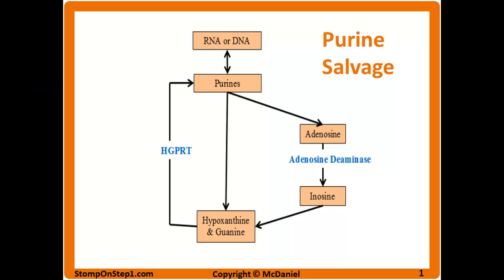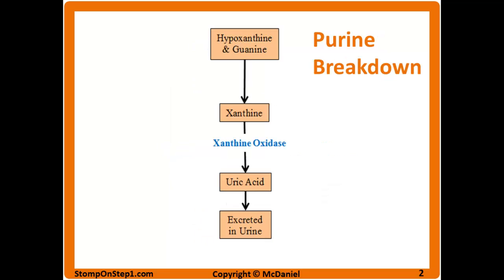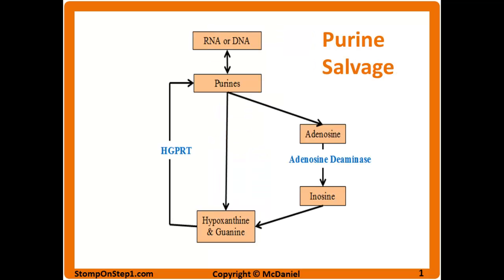These next two slides were originally one big flowchart, and I wish I could show it to you like that, but I couldn't figure out a way to get it all to fit on the video and still be legible. This first slide shows you how you get down to hypoxanthine and guanine, and then the next slide shows you what happens to hypoxanthine and guanine when there's too much of it. I will post that as one big flowchart on my website, so you can go there and get that.